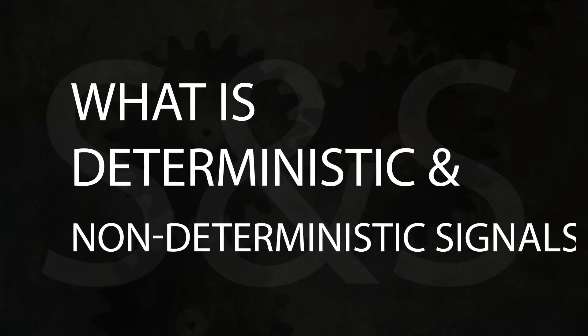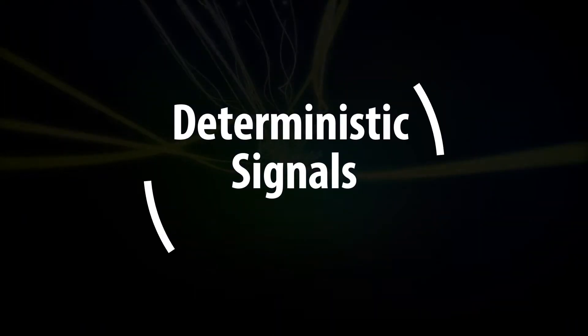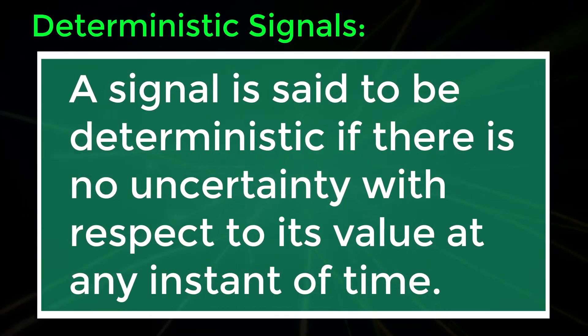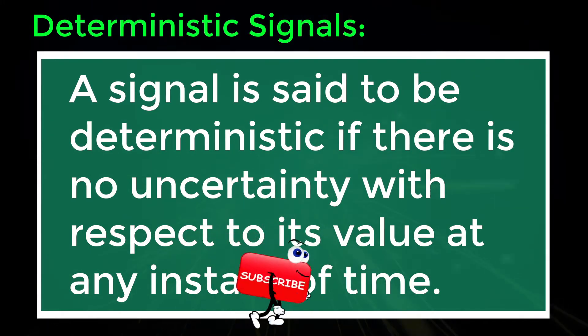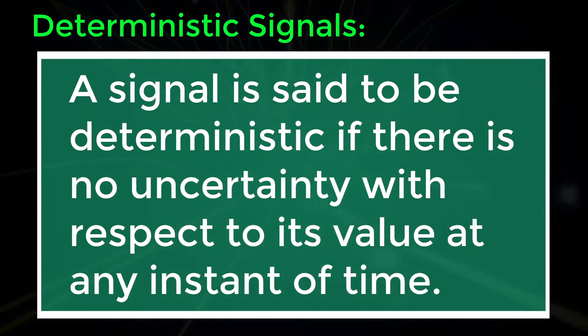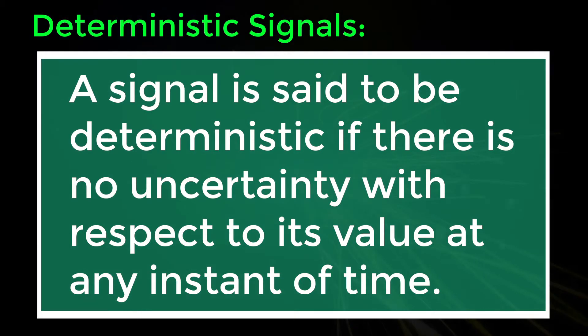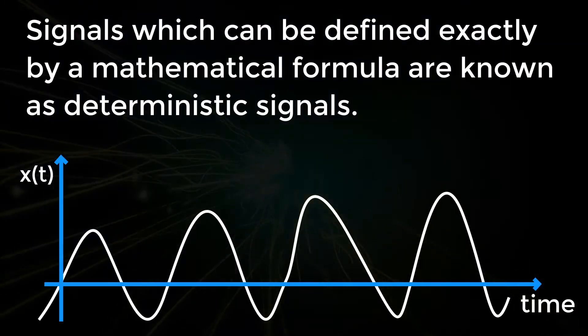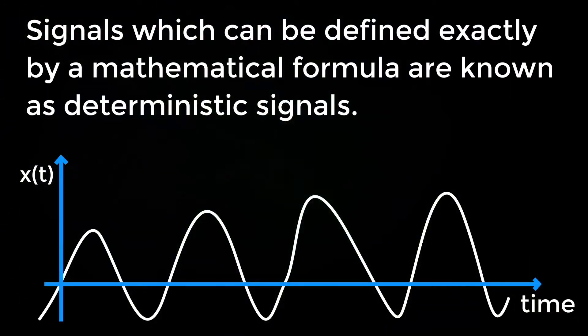What is deterministic and non-deterministic signals? Deterministic signals: A signal is said to be deterministic if there is no uncertainty with respect to its value at any instant of time.